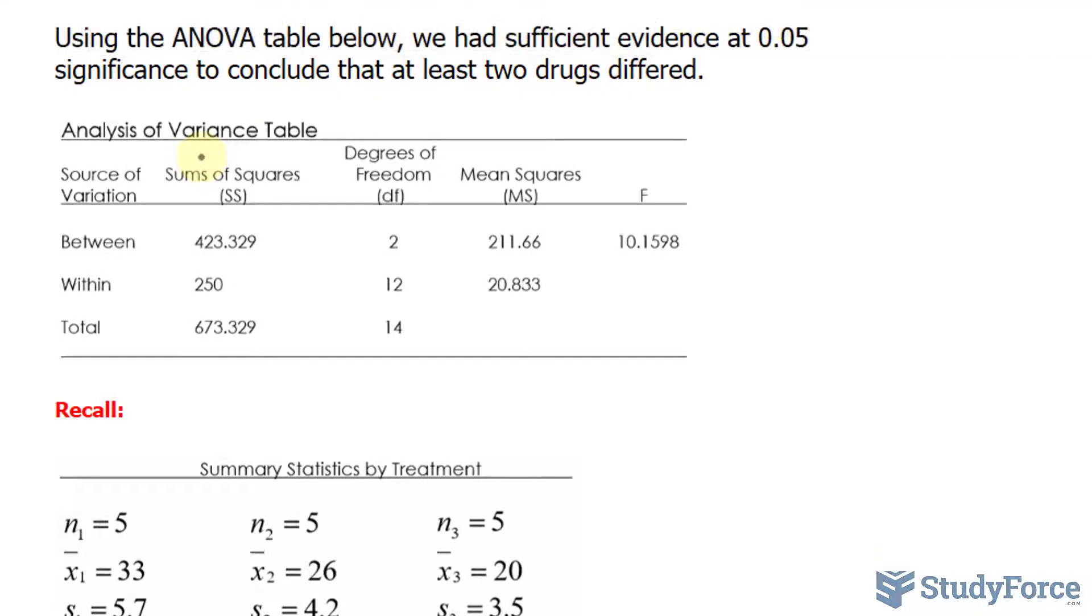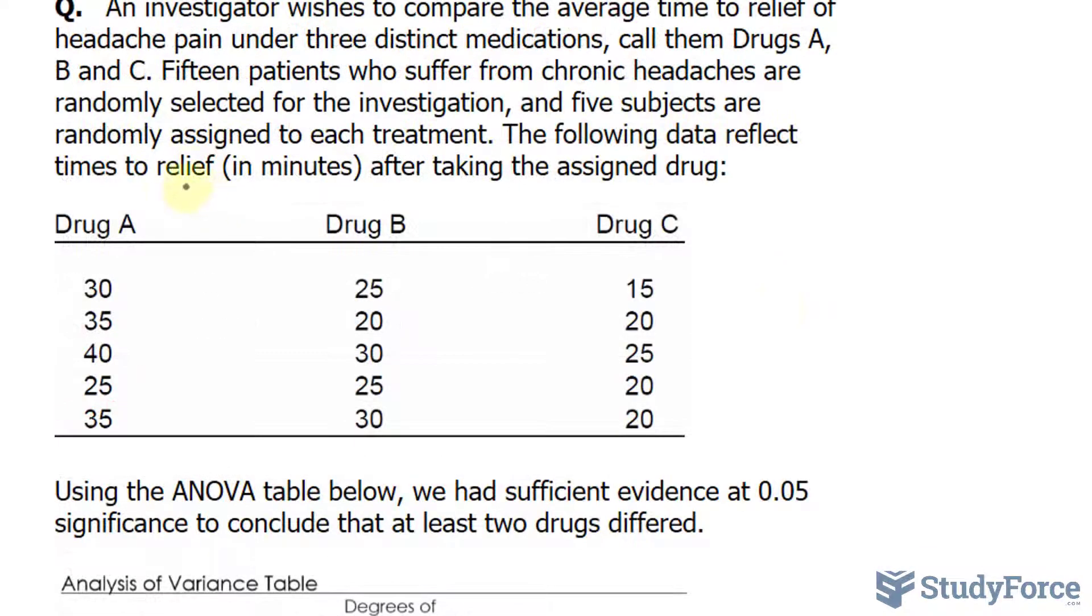Now let's find out which of these drugs were in fact significantly different. Because there are three groups, let's call drug A group 1, this group 2, and group 3, we have three comparisons to make: groups 1 and 2, 1 and 3, and 2 and 3.